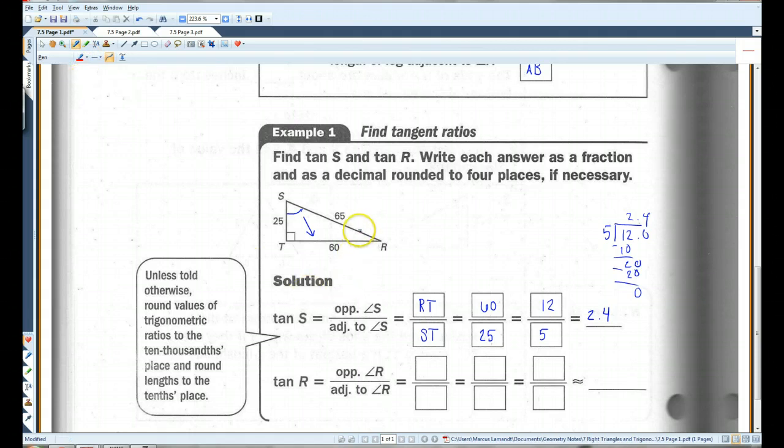Now, when dealing with angle R, the side opposite angle R is 25. And the side adjacent angle R is 60. So we've got ST over RT now, 25 over 60, which is 5 over 12.